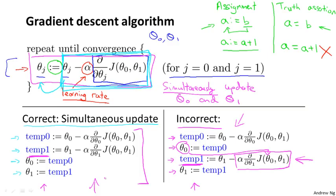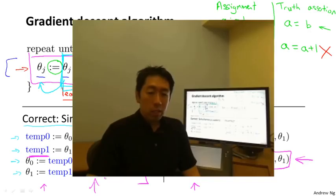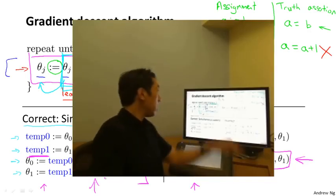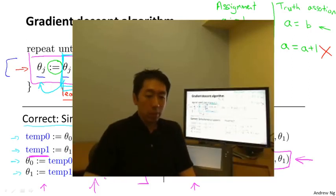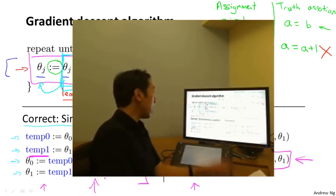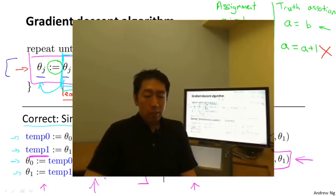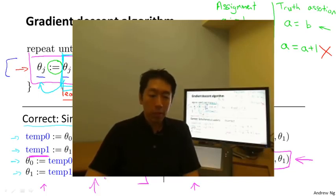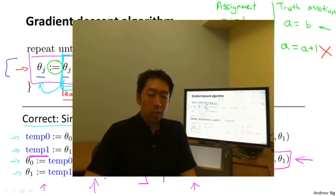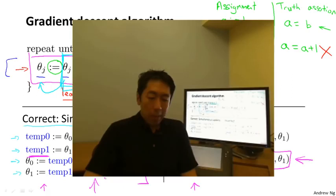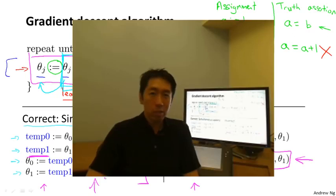So that's the outline of the gradient descent algorithm. In the next video, we're going to go into the details of the derivative term, which I wrote out but didn't really define. If you've taken a calculus class before and are familiar with partial derivatives and derivatives, it turns out that's exactly what that derivative term is. But in case you aren't familiar with calculus, don't worry about it — the next video will give you all the intuitions and tell you everything you need to know to compute that derivative term, even if you haven't seen calculus or partial derivatives before. Hopefully, we'll be able to give you all the intuitions you need to apply gradient descent.